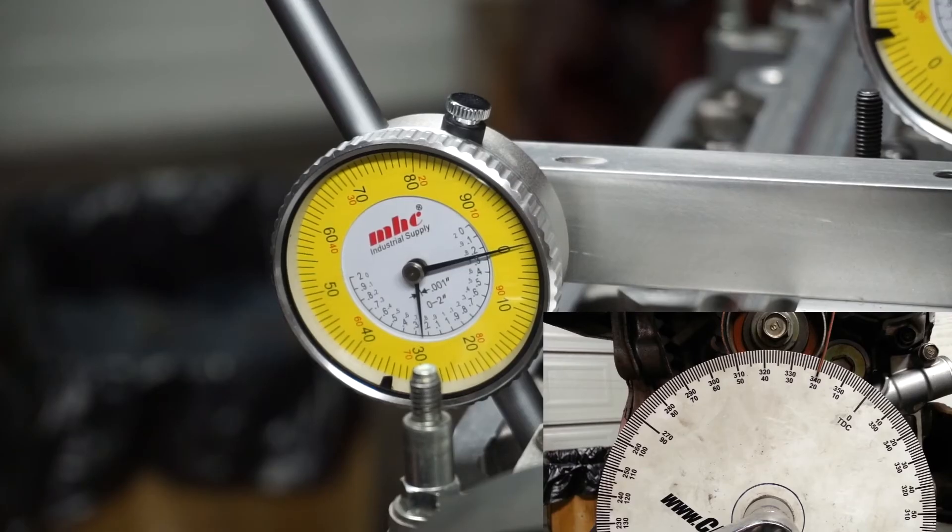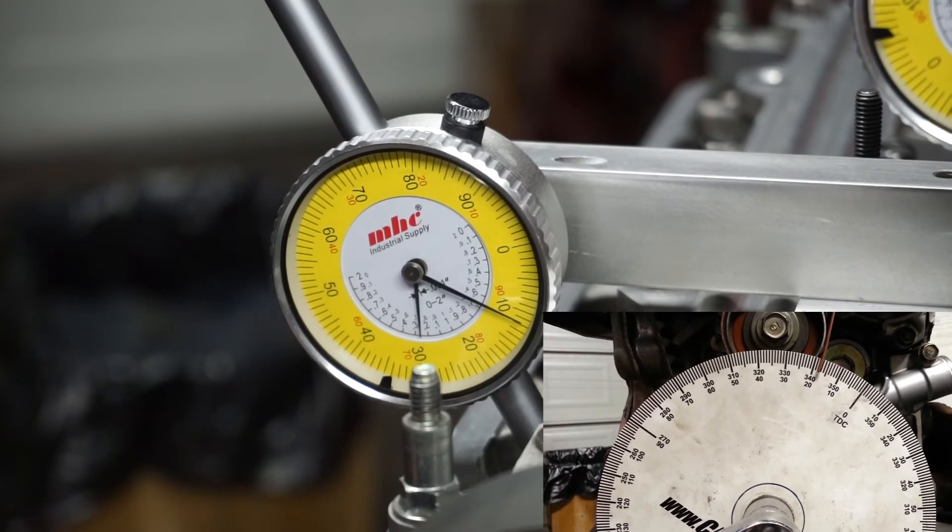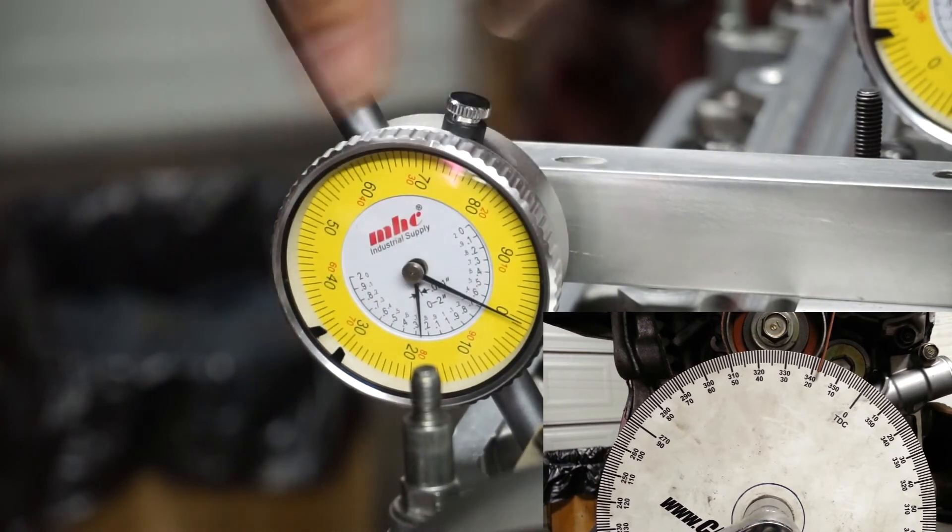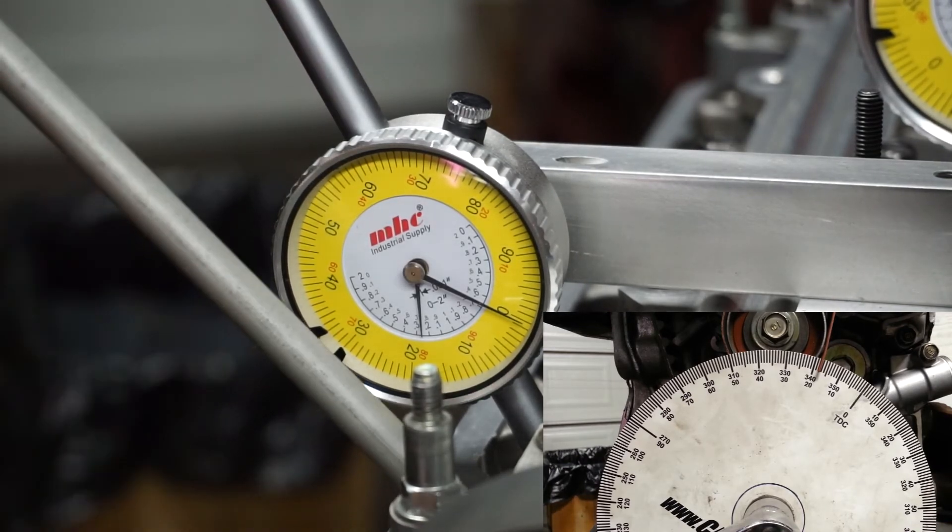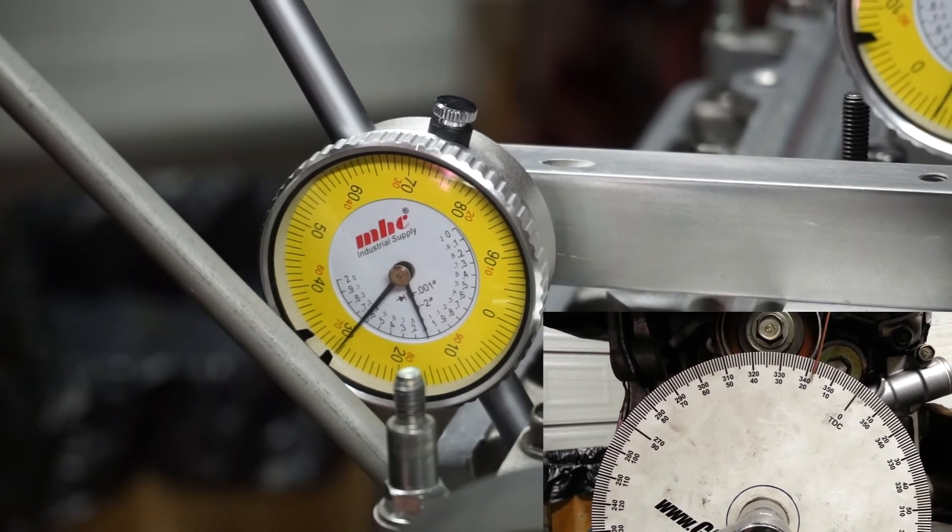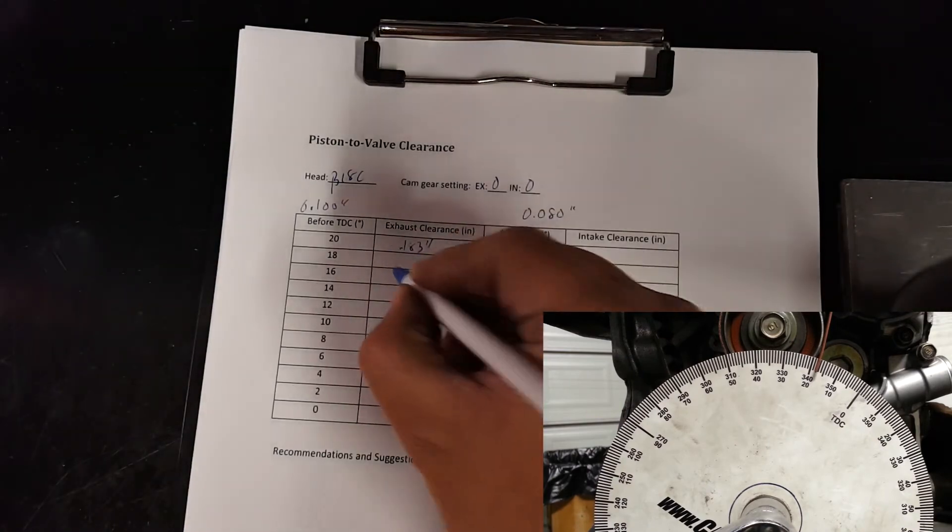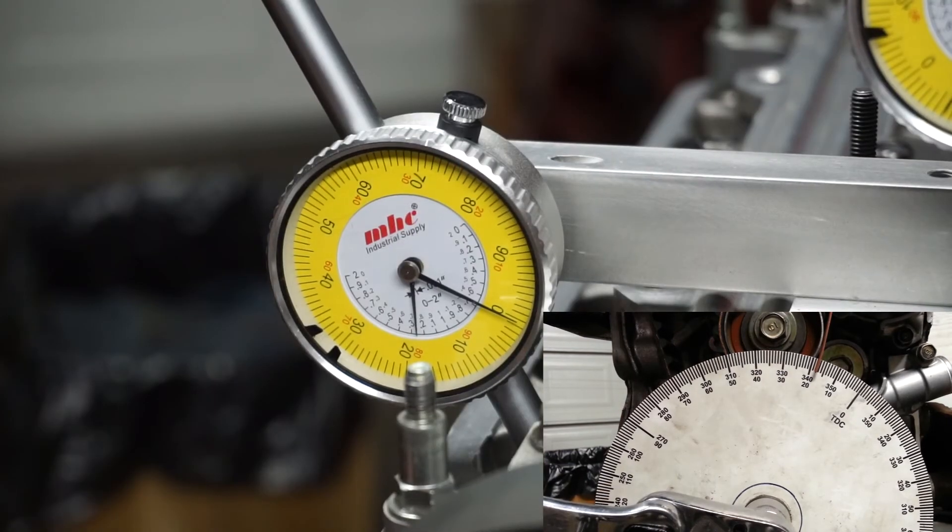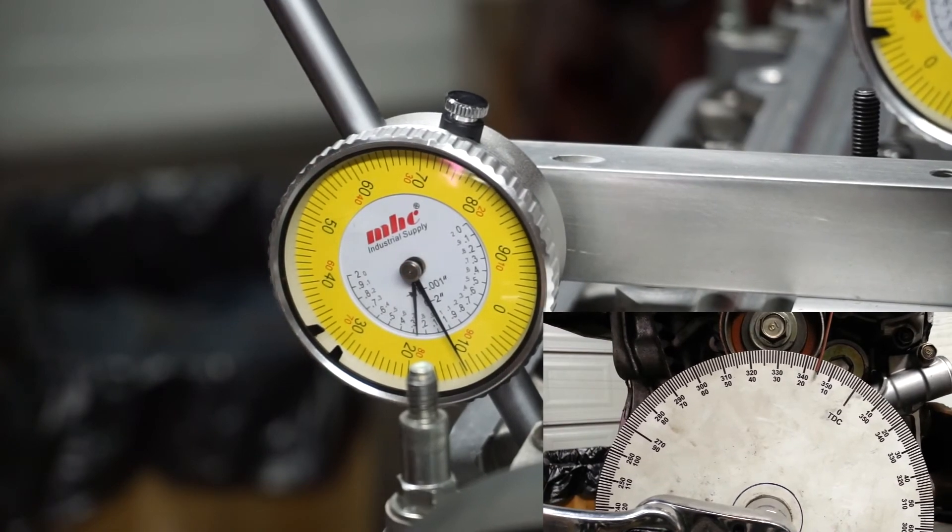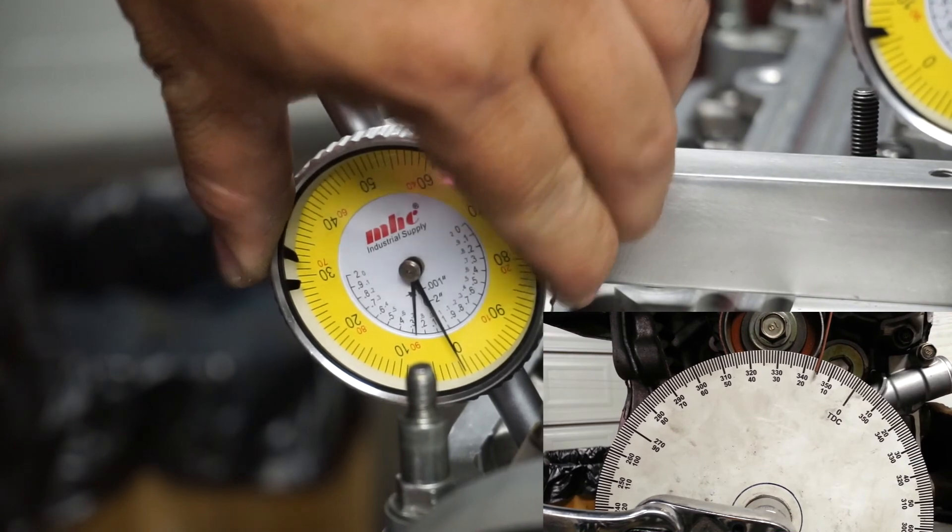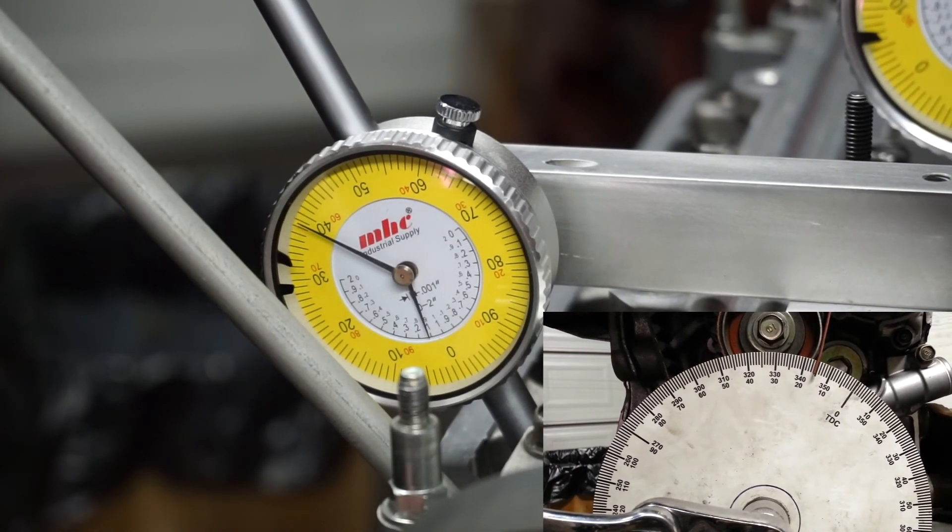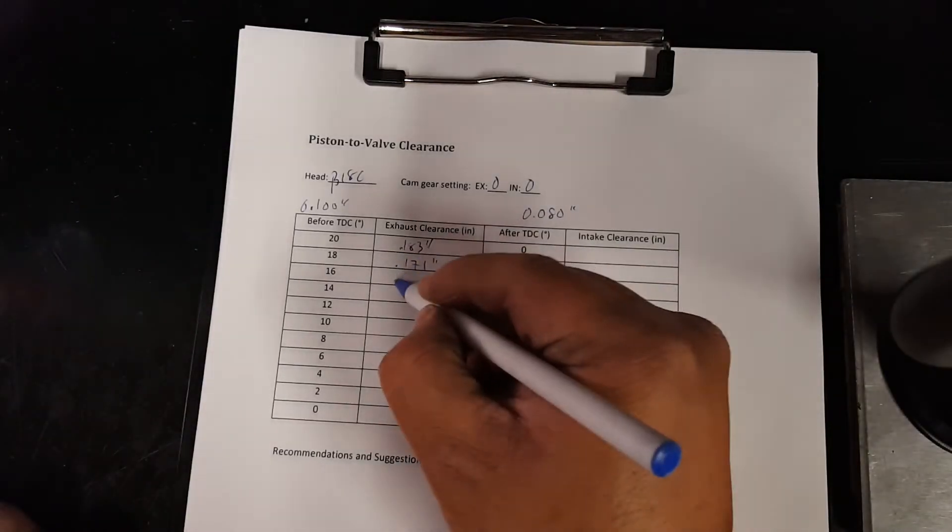Now I'll go 2 degrees to 18. I'll move this wheel 2 degrees and I'll zero this gauge again. Every time you do it, you'll zero it and push down. That's 171. I'll do one more - go to your next, which is 16 degrees before top dead center. Zero your gauge and push down. That's 161.